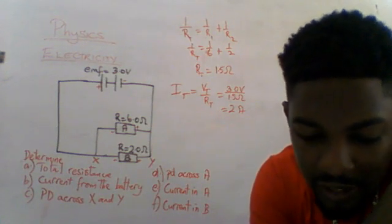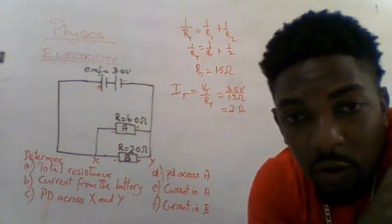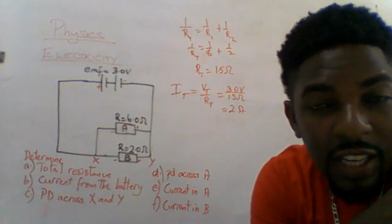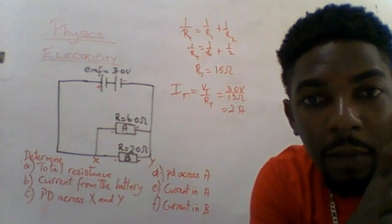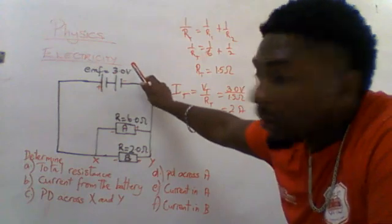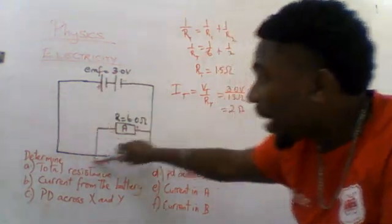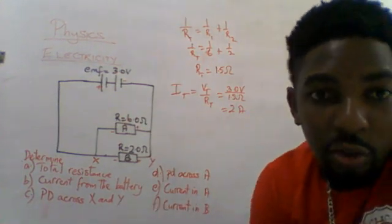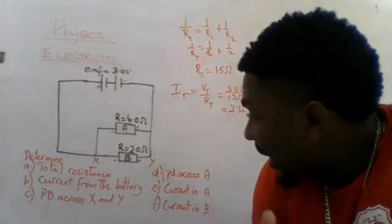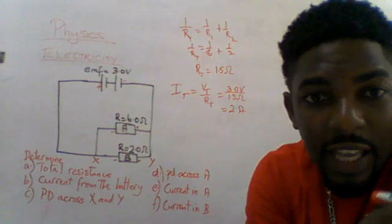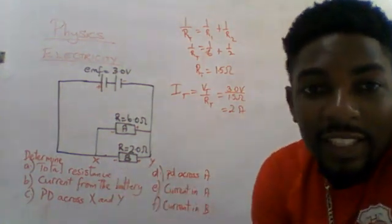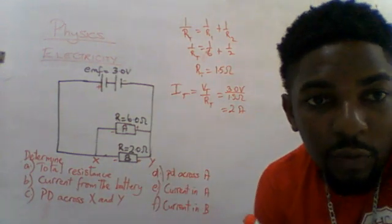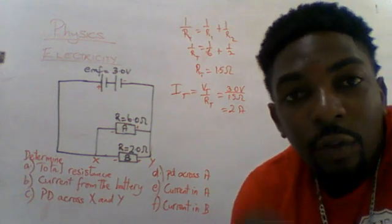The next question asks for the potential difference across X and Y. Because it is a parallel circuit, the voltage delivered is always constant. The 3 volts is the same throughout the entire circuit. The potential difference across A is the same — 3 volts. The potential difference across B is also 3 volts, because in a parallel circuit voltage is constant.